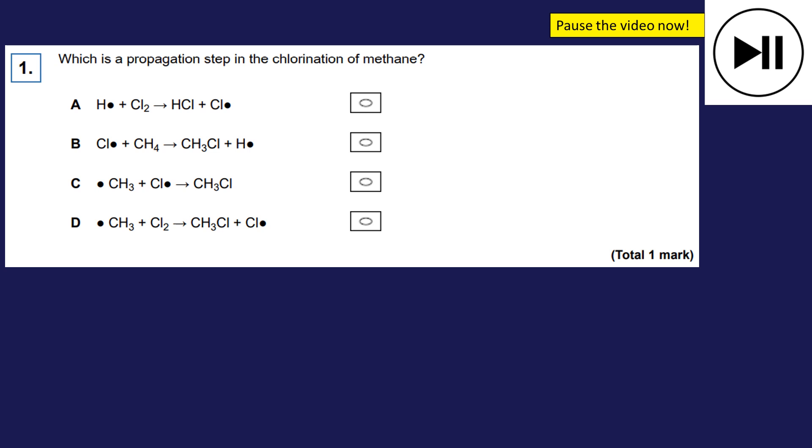So this is asking for a propagation step. Now, without even looking at any detail, I'm completely ignoring step C because I can see that's a termination step because it's the coming together of two free radicals to make a non free radical. The other three, however, do have a free radical in the reactants and do have a free radical in the products, which is a propagation step. Now, for the chlorination of methane, well, A is definitely wrong. I don't ever remember talking about hydrogen free radicals. So I'm now ruling out A.